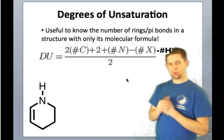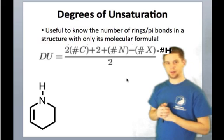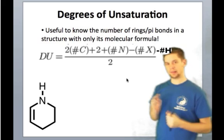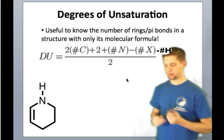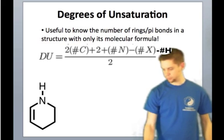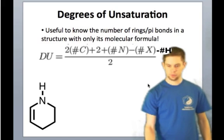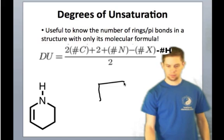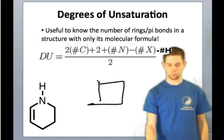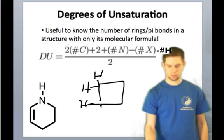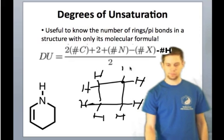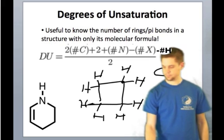What you'll notice if you take a look at the cycloalkanes is they possess a molecular formula that has two fewer hydrogens than their open-chain analogs. Consider, for instance, cyclobutane—a molecule with four carbons, and off of each of the four carbons there are two hydrogens. So we would expect cyclobutane to have the molecular formula C4H8.